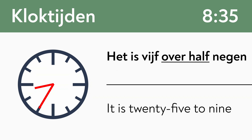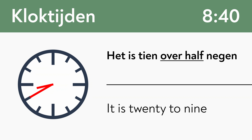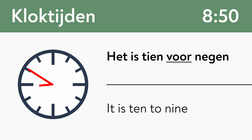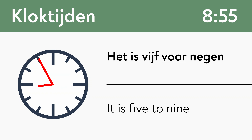'Vijf over half negen.' In the 'over half' part, we count the minutes that are past the half hour. 'Tien over half negen.' 'Kwart voor negen.' 'Tien voor negen.' And then in the 'voor' part, we count the minutes to the next hour.